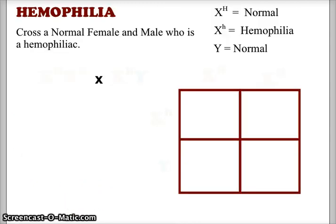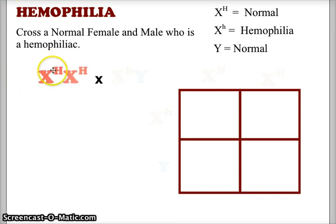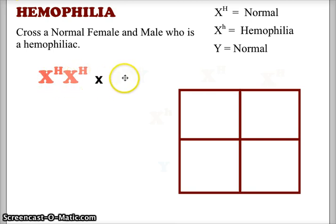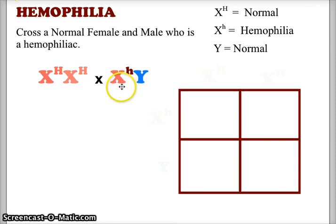Let's look at some examples using the Punnett square. We're going to cross a normal female and a male who is a hemophiliac. The normal female is X^H X^H — homozygous for normal blood. The male who has hemophilia is X^h Y.